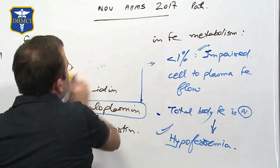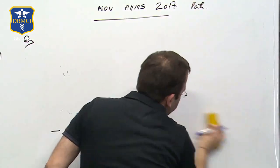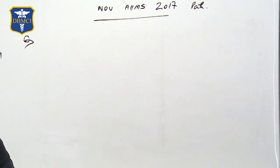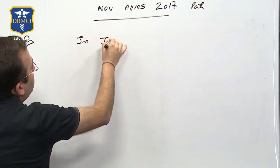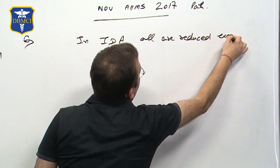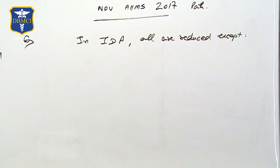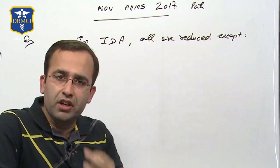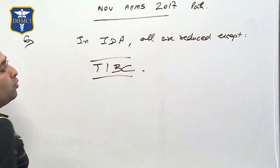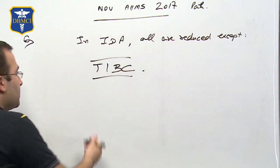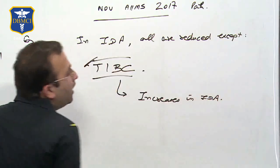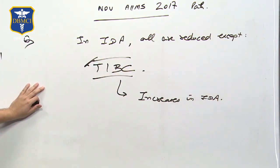The next hematology question: in iron deficiency anemia, all are reduced EXCEPT which? In IDA, serum iron, transferrin saturation, serum ferritin, and bone marrow iron all reduce. What does NOT reduce — and actually increases — is TIBC, total iron binding capacity. TIBC increases in iron deficiency anemia.